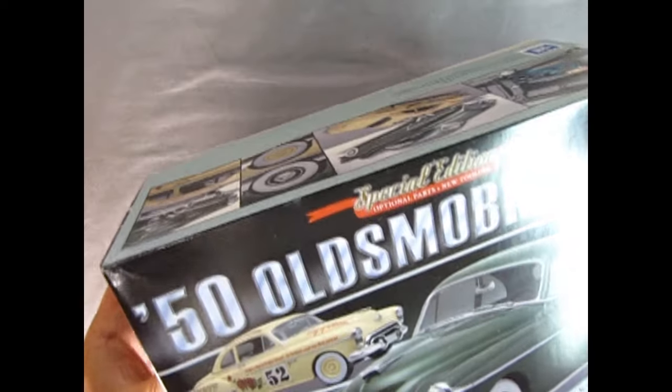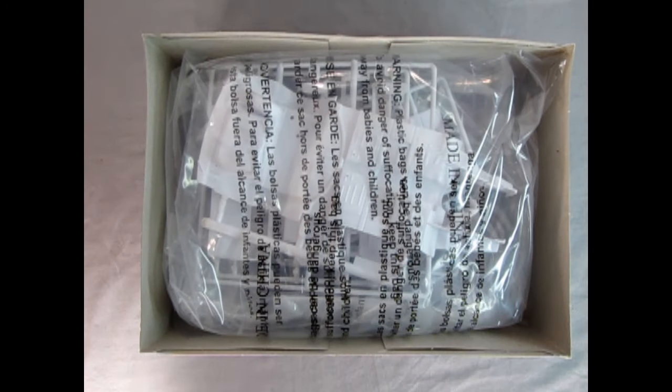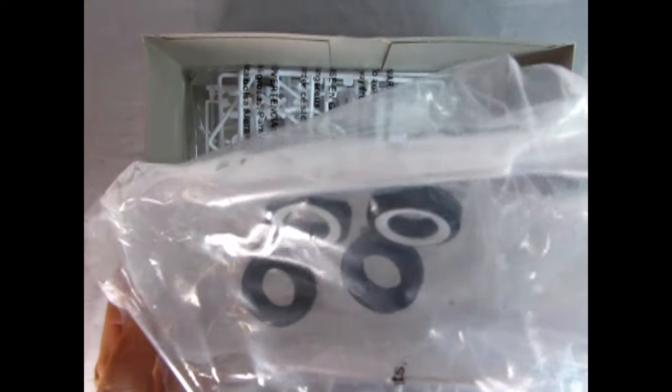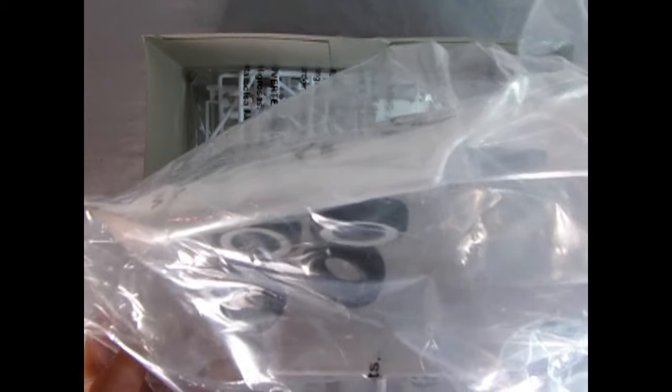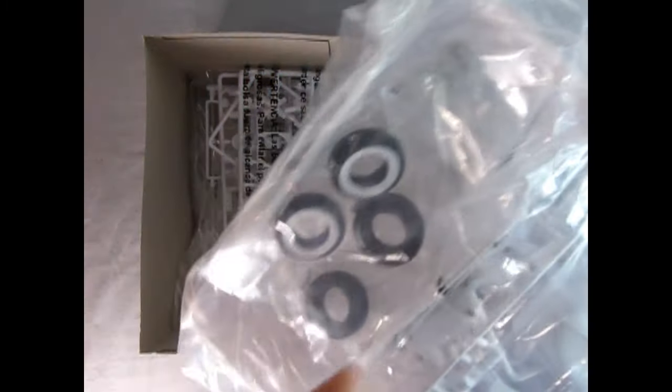Now the thing is I just took the shrink wrap off this so it might be a little bit tight. Oh there it goes which is always good. So we've got a bag of plastic here. This includes our body and a bunch of the other components. There's our tires inside. Looks like some metal pins for axles or something. We'll take a look once we get into the instructions.